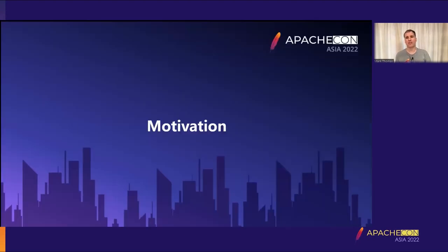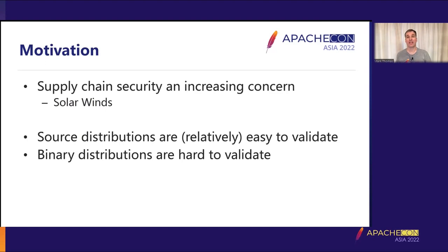I want to start by discussing what the motivation was for Tomcat to create reproducible builds. It all comes back down to supply chain security. This has always been a concern, and it's been increasing as time has progressed. The SolarWinds attack really brought that to the fore of a lot of people's thinking.